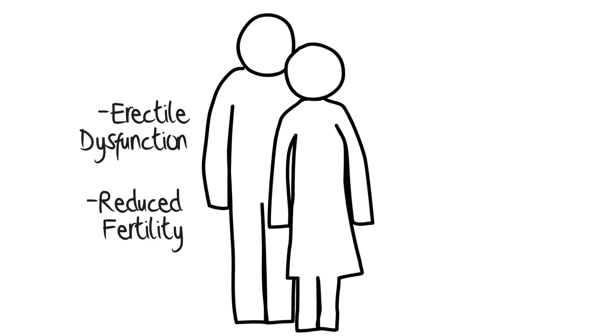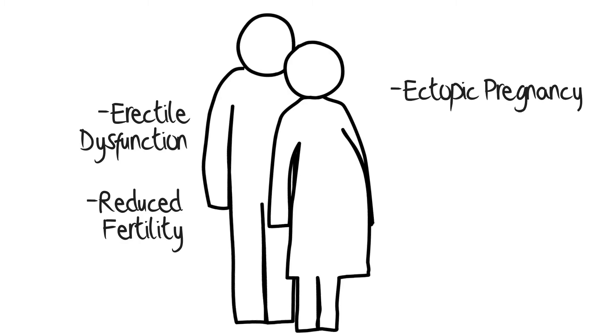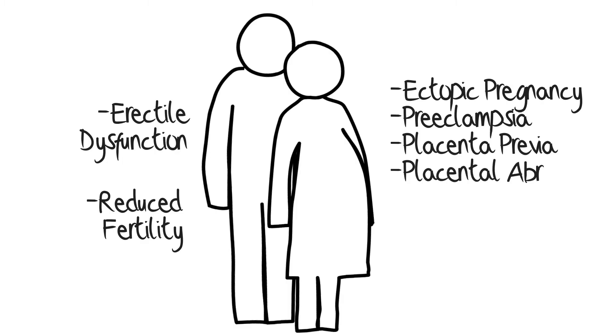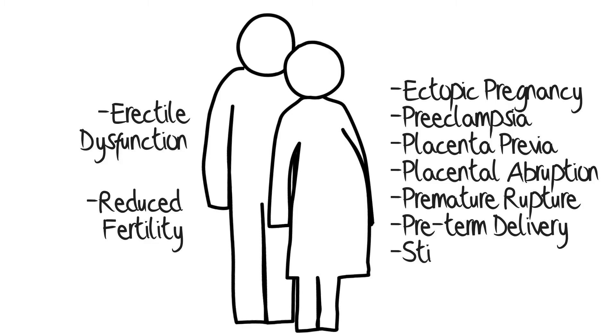Women who smoke during pregnancy increase their risk for complications, such as ectopic pregnancy, preeclampsia, placenta previa, placental abruption, premature rupture of membranes, preterm delivery, and stillbirth.